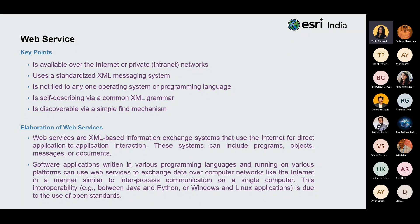Web services are XML-based information exchange systems that use the internet for direct application-to-application interaction. These systems can include programs, objects, messages, or documents. Key points: they are available over the internet or private networks, use a standardized XML messaging system, are not tied to any one operating system or programming language, and are self-describing by a common XML schema. Software written in various languages like Java, Python, or running on Windows or Linux can use web services to exchange data over networks, similar to inter-process communication on a single computer. Interoperability is due to the use of open standards.